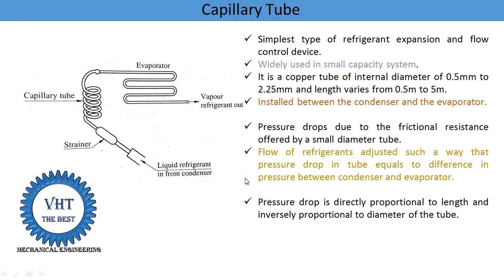If we require a higher pressure drop, we select a smaller diameter tube. There are a number of possibilities — suppose the required pressure difference from condenser to evaporator is 6 bar. For that 6 bar pressure difference, a number of diameter and length combinations are possible. If we select 1 mm diameter, the length is different; if we select 0.5 mm diameter, the length is different. Once we select a particular diameter and length for a certain pressure drop, it is fixed for that particular system.